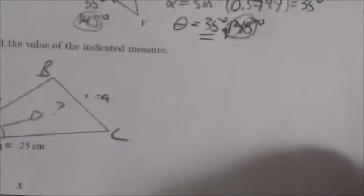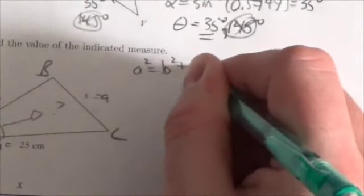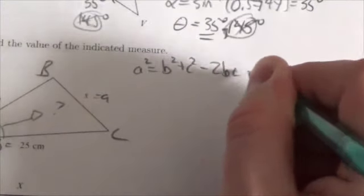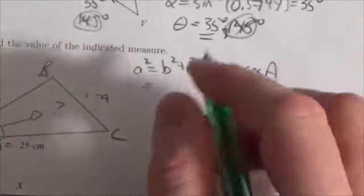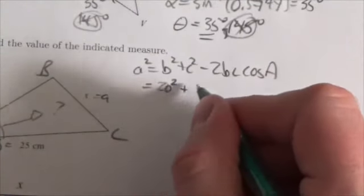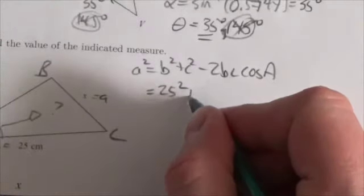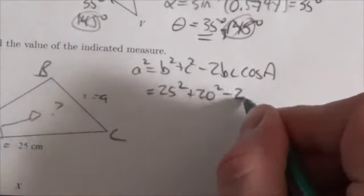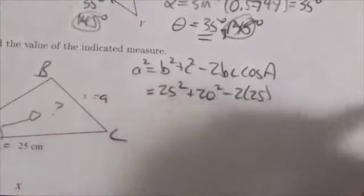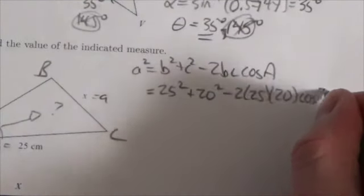So my equation will be a squared is equal to b squared plus c squared minus 2bc times the cosine of A, and I'll just plug everything in, so that's going to be 20 squared plus 25, sorry, instantly I did that backwards. It doesn't really matter, but just to be consistent, so it's going to be 25 squared plus 20 squared minus 2 times 25 times 20 times the cosine of 30 degrees.